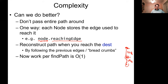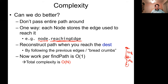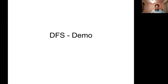If I do this, the work per find-path call is order one — we already showed we only go through the loop about four times, and setting a single variable is also order one. So the total complexity of this depth-first search algorithm becomes order N, which is fast. That's pretty good for a graph algorithm.